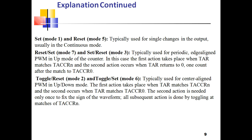In up mode, the first action takes place when the timer register matches the capture/compare register, and the second action occurs when the timer register returns to 0, one count after the match. Modes 2 (toggle/reset) and 6 (toggle/set) are used for center-aligned pulse-width modulation in up/down mode. The first action occurs when TR matches the capture/compare register; the second action in mode 6 occurs when TR matches TACCR0. The second action is needed only once to fix the sign of the waveform; all subsequent actions are done by toggling at the capture/compare register match.